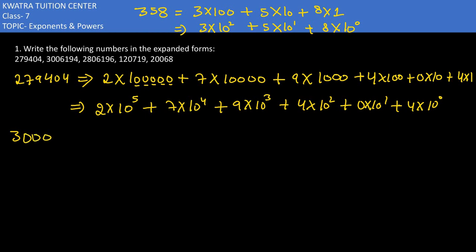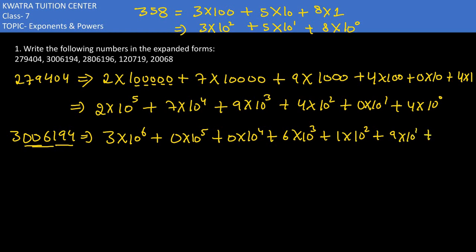So we have 3006194. 3 is at 10⁶ place - you can see 6 numbers after 3, so 10⁶. Then 0 ke saath 10⁵, 0 ke saath 10⁴, then we have 6 at 1000's place so 10³, 1 is at 100 so 10², then 9 ke saath 10¹, then 4 into 10⁰.